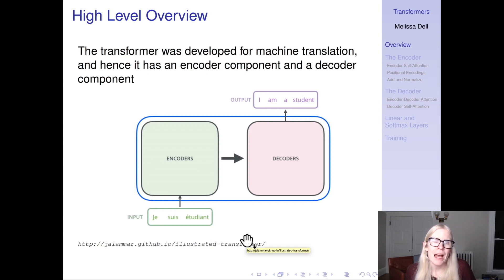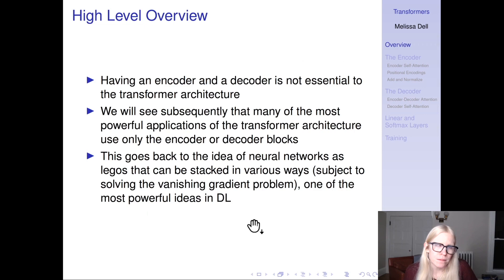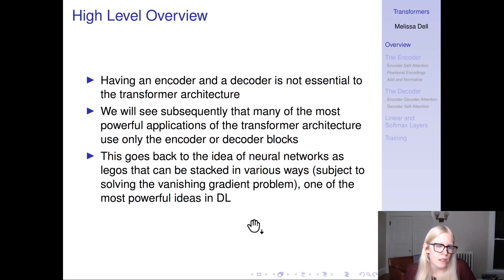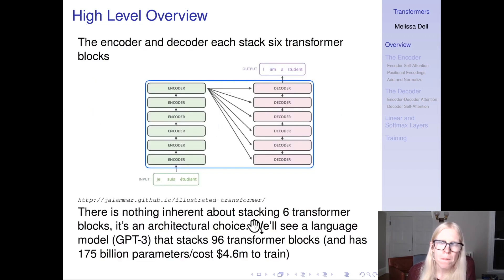Let me give a very high-level overview. The transformer was developed for machine translation, and so it has an encoder and a decoder component, just like we saw in the pre-transformer models of machine translation from last week. Importantly, having an encoder and decoder is not essential to the transformer architecture. We're going to see subsequently that many of the most powerful applications use only the encoder or only the decoder blocks. This goes back to a theme of the course: neural networks are like Legos, and they can be stacked in various ways, subject to solving the vanishing gradient problem.